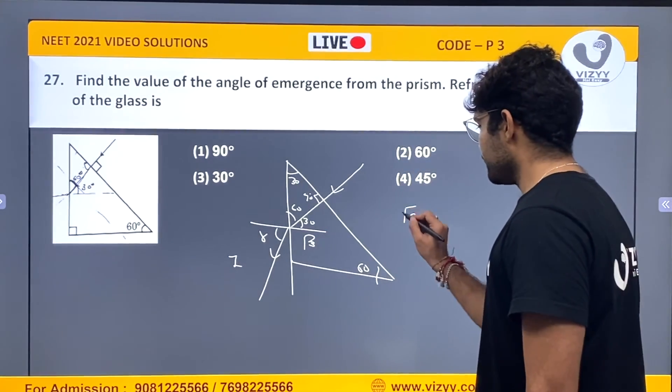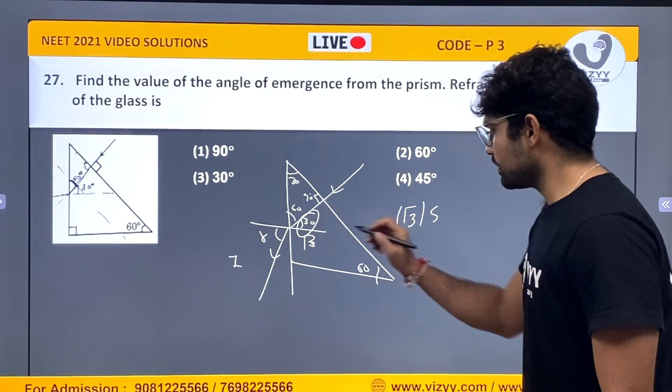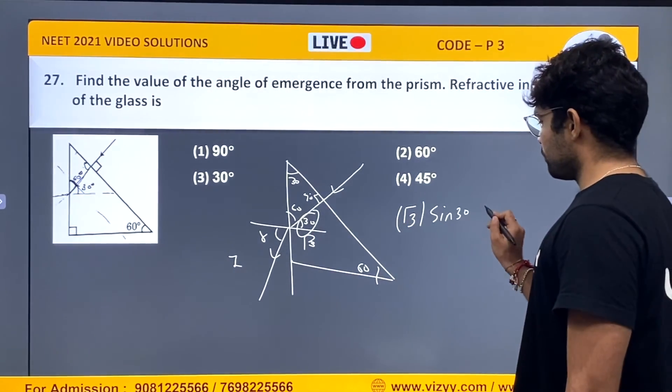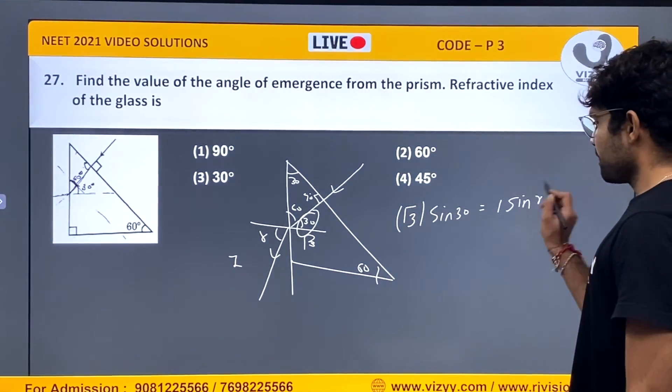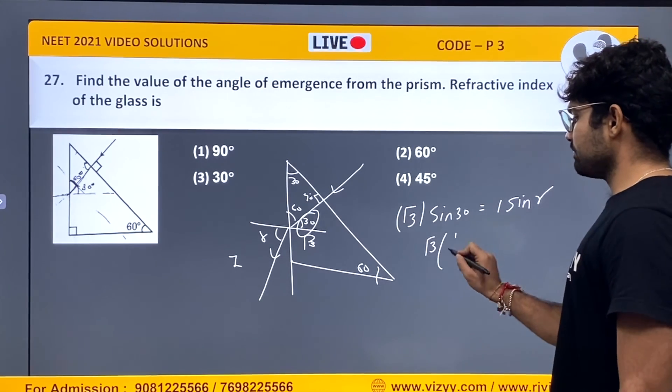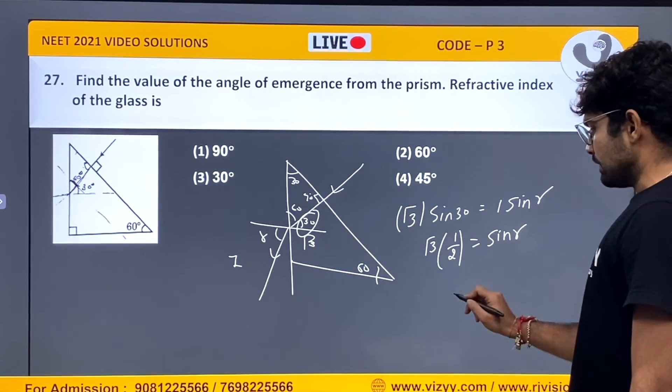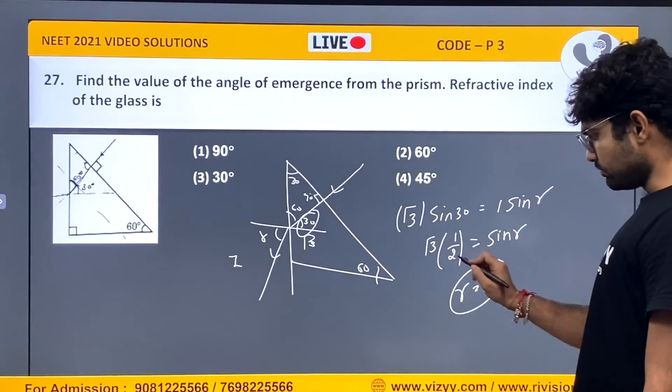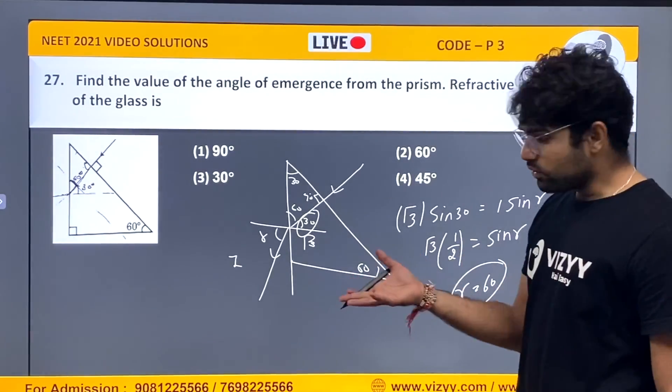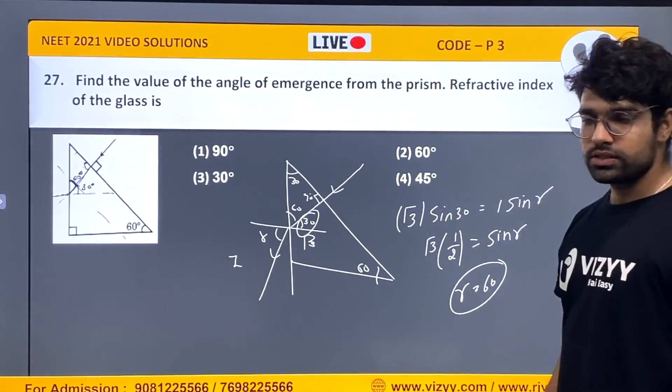Root 3 into sine 30, which equals 1 into sine R. So root 3 into sine 30 is 1 by 2, which equals sine R. So angle R is 60 degree. Root 3 by 2, sine of which angle is 60 degree. So answer is 60 degree.